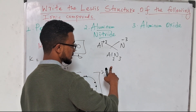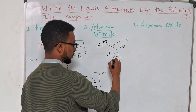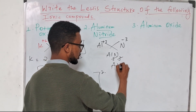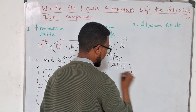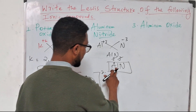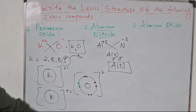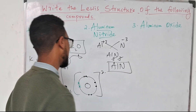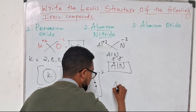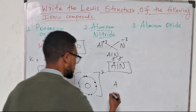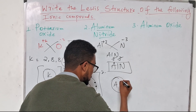Criss-crossing gives us Al₃N₃, but the formula of any compound should be in the smallest possible ratio, so this simplifies to AlN. For the Lewis structure, one formula unit of aluminum nitride has one aluminum ion and one nitrogen ion. Aluminum's last shell will have no electrons because it has already lost its three electrons.